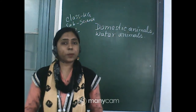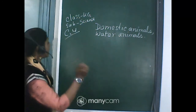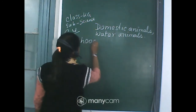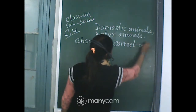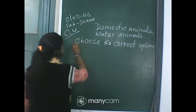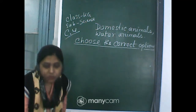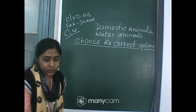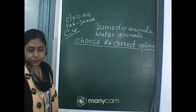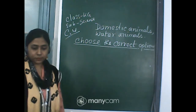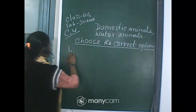Based on animals around us, we are doing an activity today. All of you get ready with your copy and write with me. Write CW. Today we will do some questions — first, write 'Choose the correct option.' Question number one: